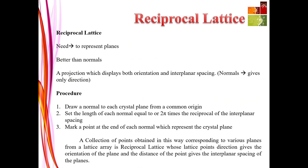To understand the diffraction pattern, we need to get an idea about the reciprocal lattice. The reciprocal lattice was envisaged to represent planes. This representation is better than using normals alone, because a reciprocal lattice is a projection that displays both orientation and interplanar spacing, whereas a normal only gives direction. In this case, we get both orientation and interplanar spacing.